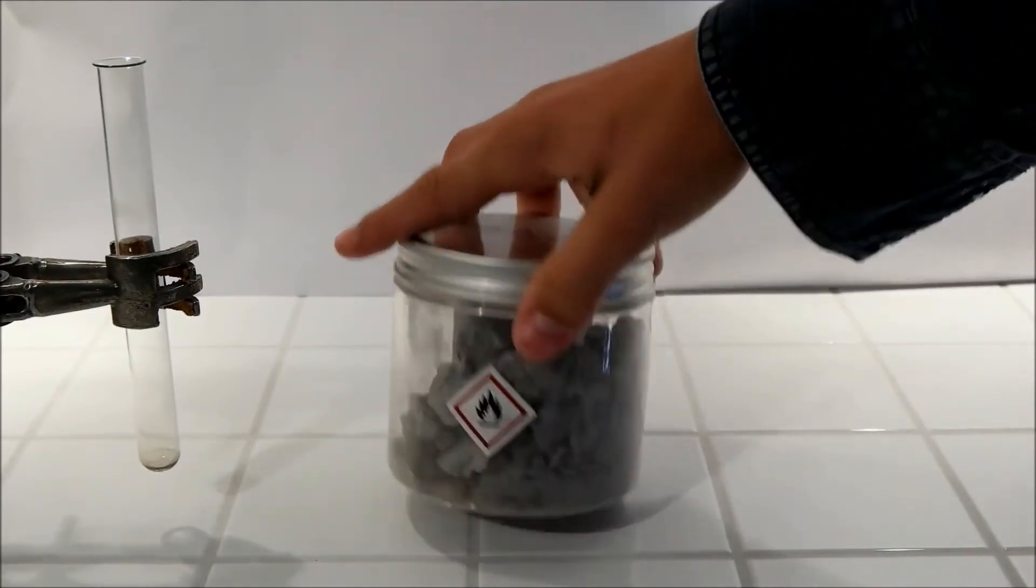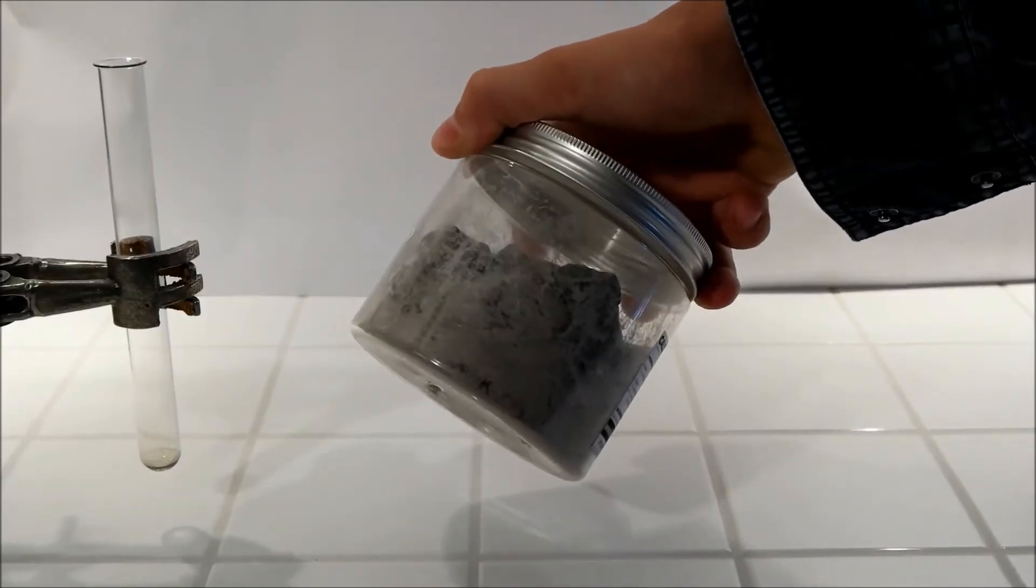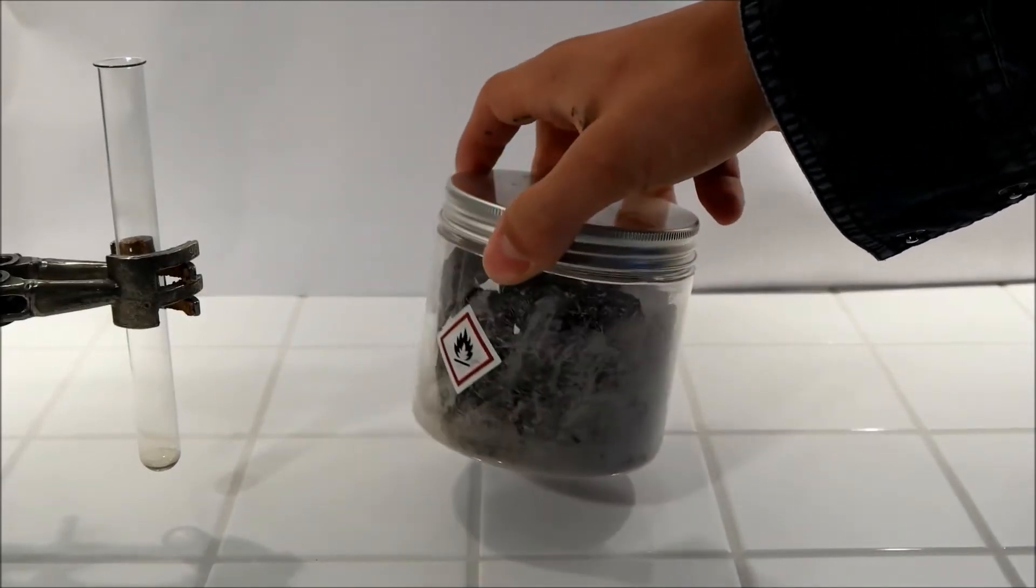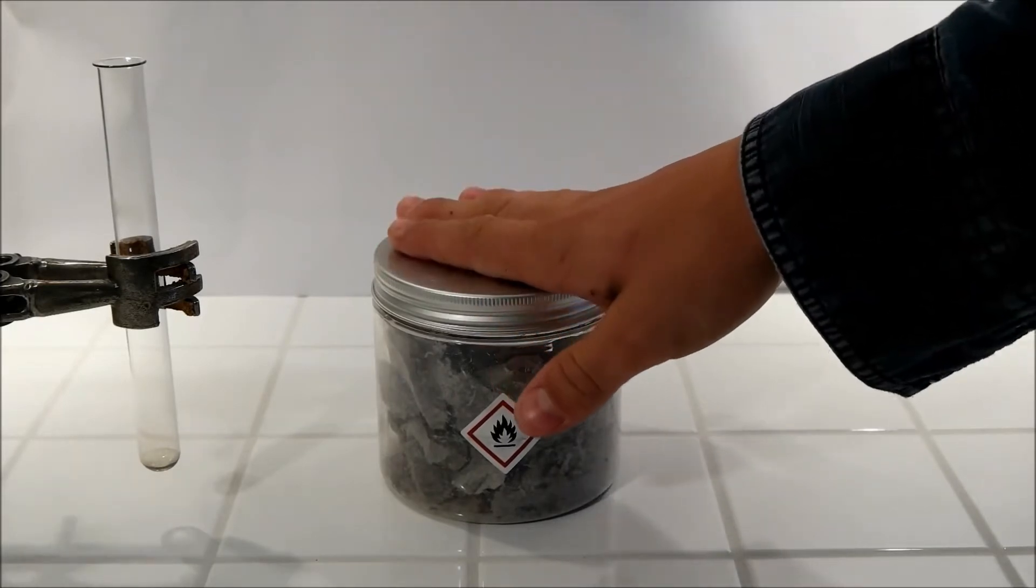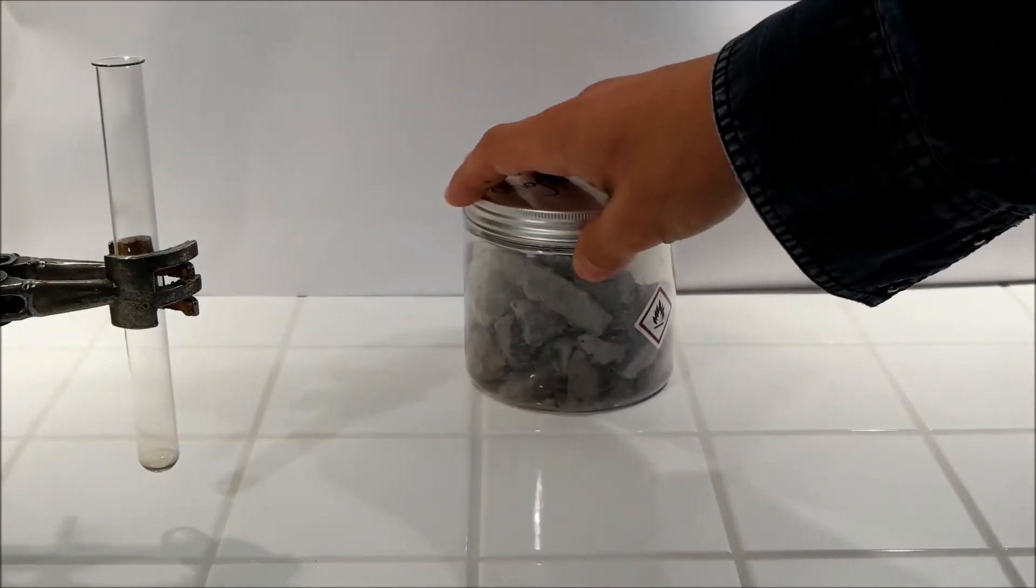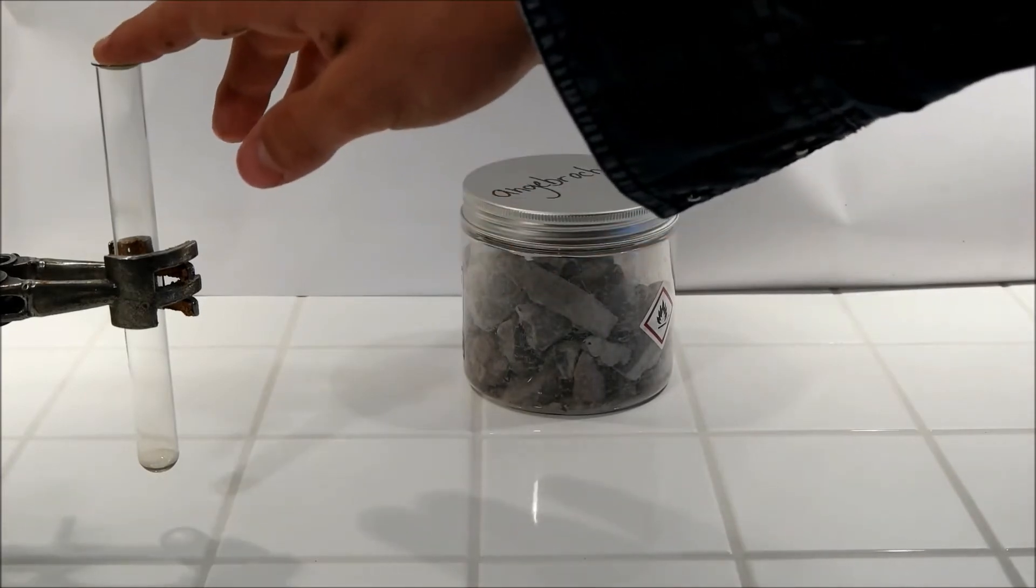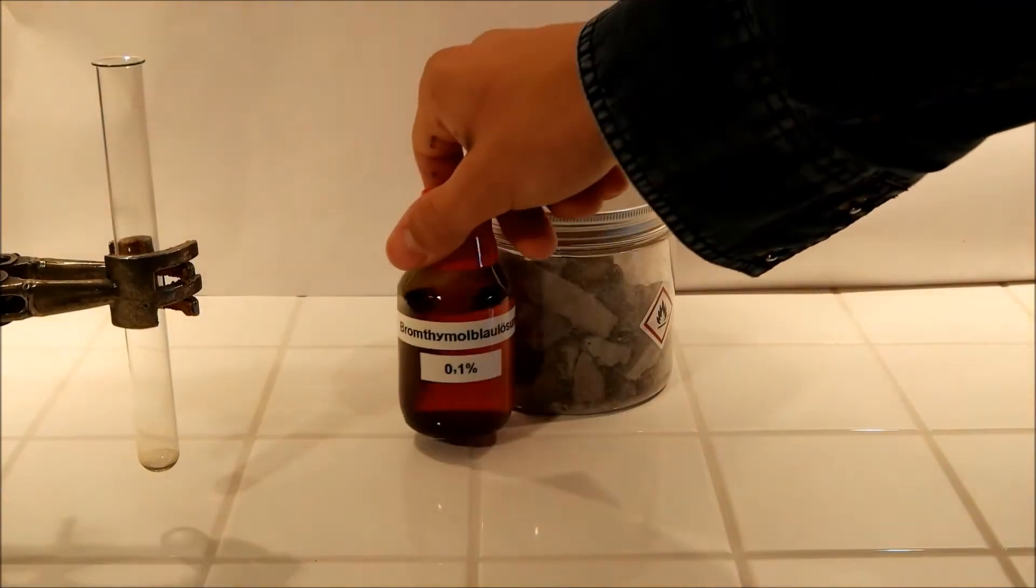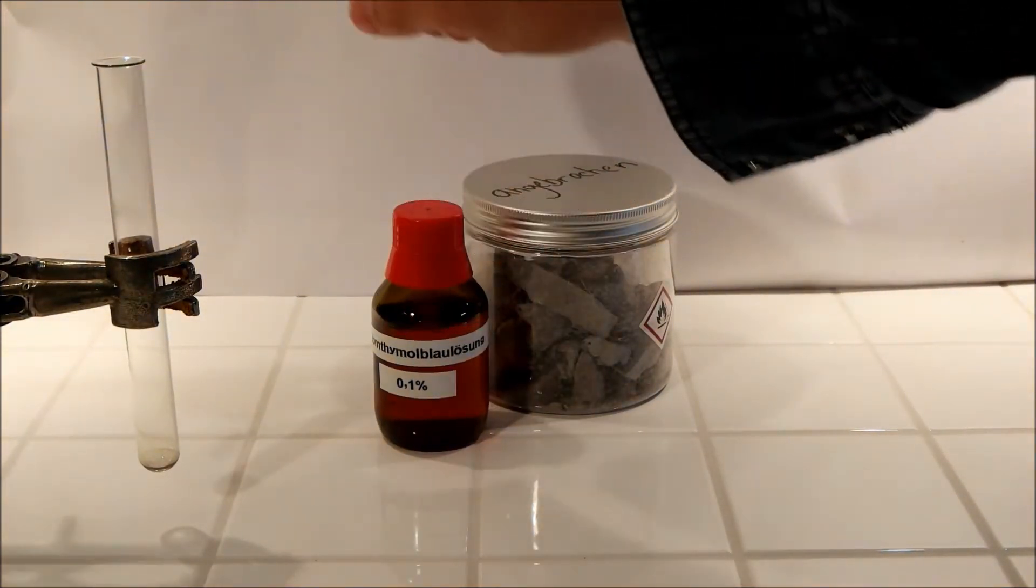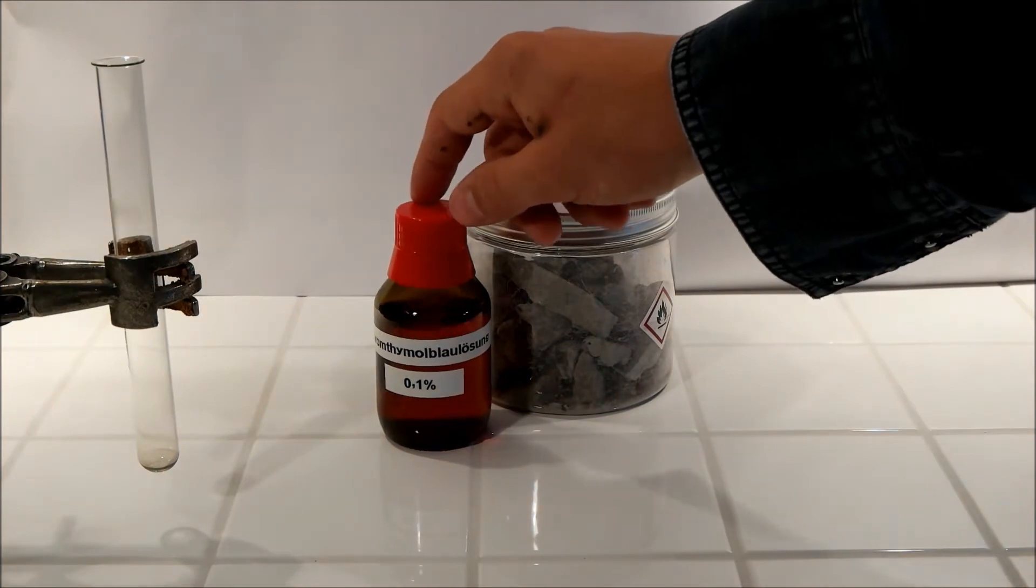So I got this 500 grams for 5 euros and if you put it together with water, there's Ethine but there's also a salt produced which is calcium hydroxide and this is a base of course and our Bromothymol Blue solution will show that it's a base.